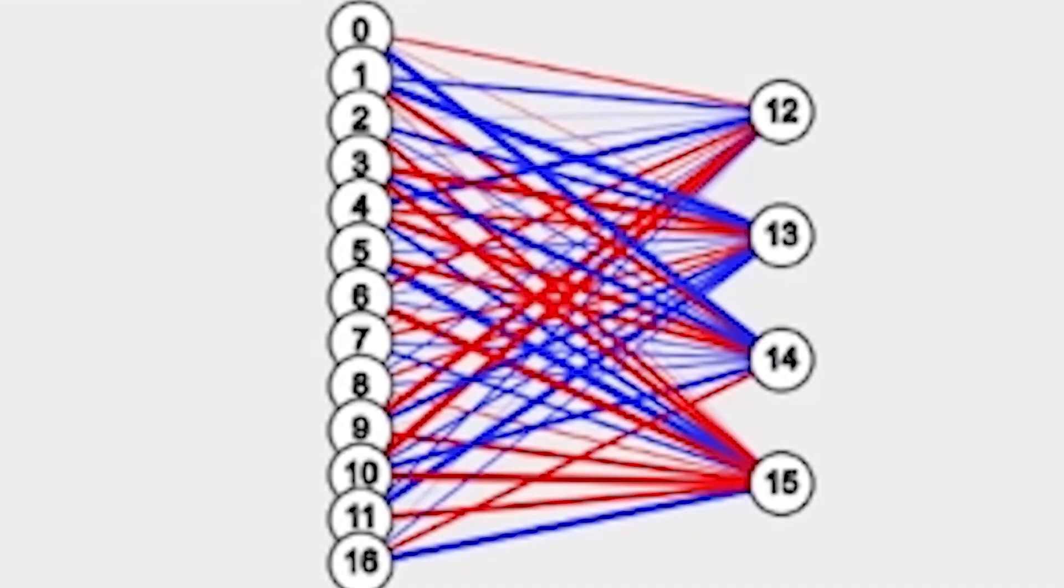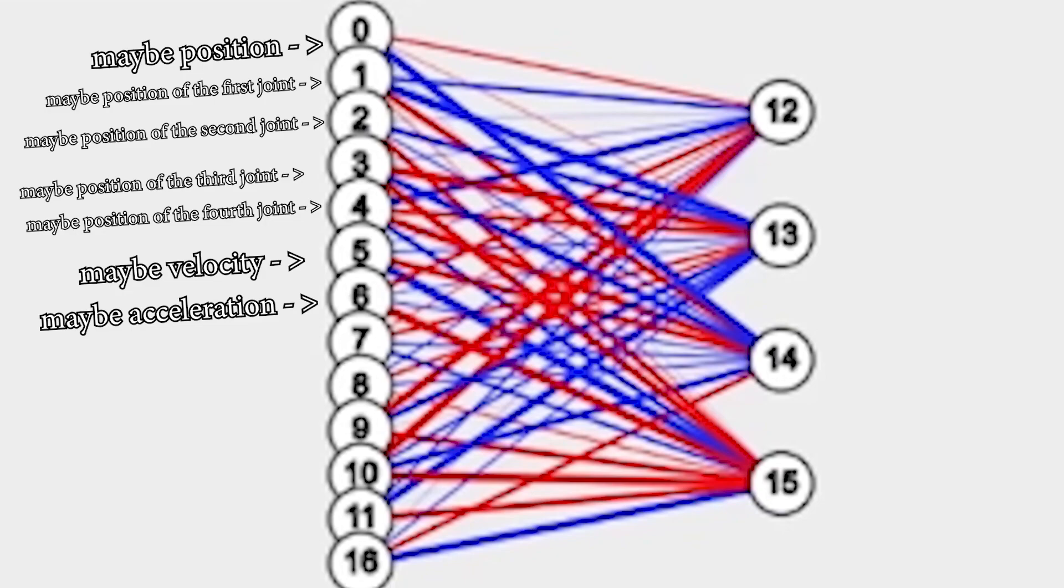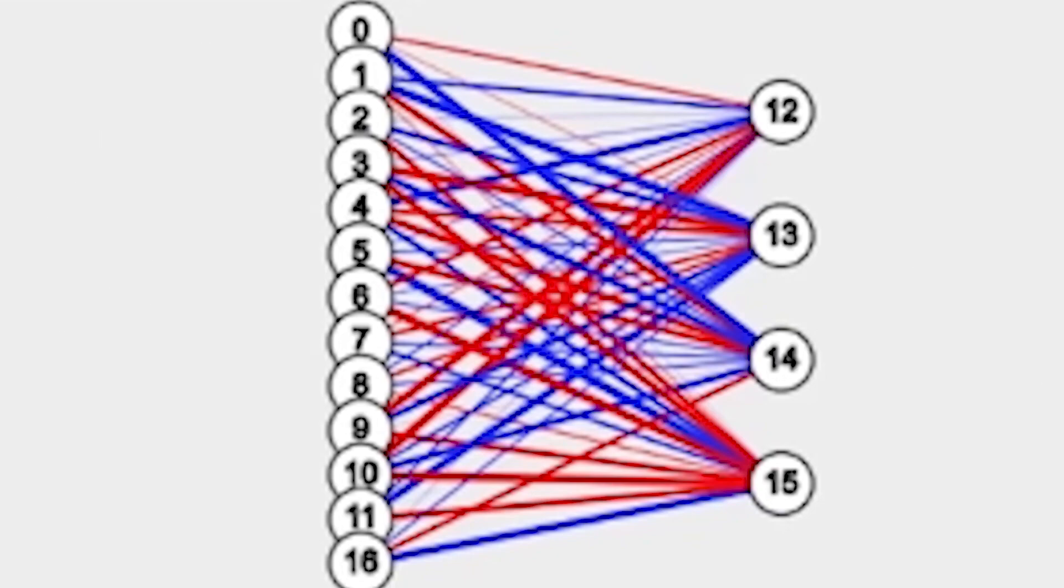So then what would you do is you'd probably make an equation for it. As I said, the machine learning equation. And it would have, let's say, 16 inputs, because why not? In the inputs, you'll have position, you'll have the position of the joints, velocity, acceleration, stuff like this, and four outputs. Four outputs in here being the position of each and every single joint.